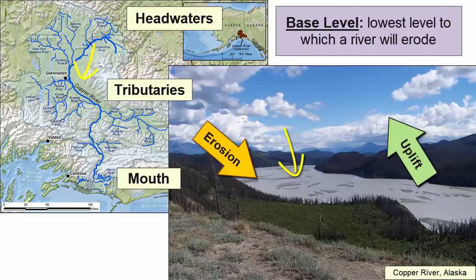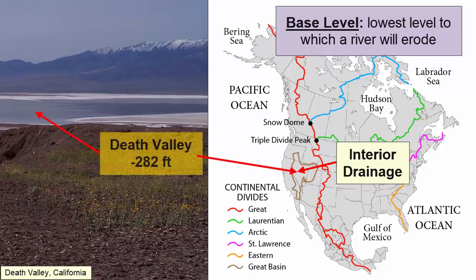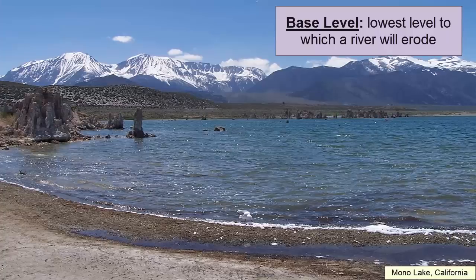Base level is the lowest level to which a river will erode. The ultimate base level for most rivers in the world is the ocean, unless a river is draining into an interior basin lower than sea level with no outlet — an example being Death Valley, California, where the lowest point is 282 feet below sea level. A lake might be a local or intermediary base level; rivers feeding that lake will erode down only to the lake's level. Once the lake drains, the rivers are back at work again.